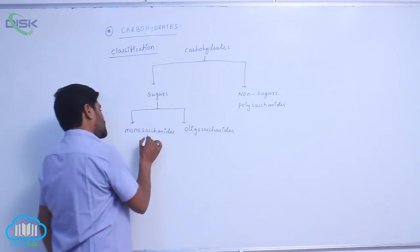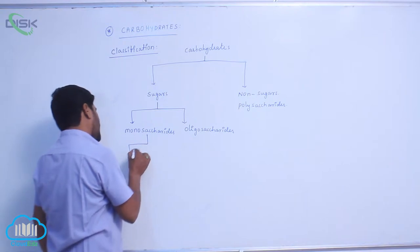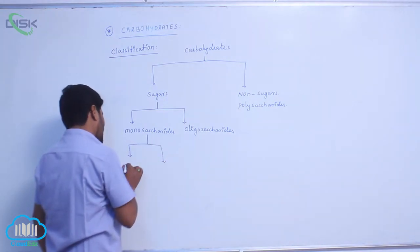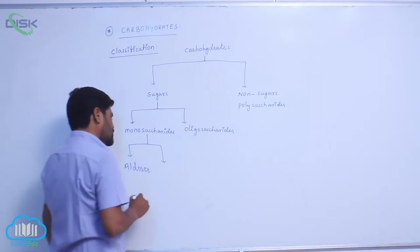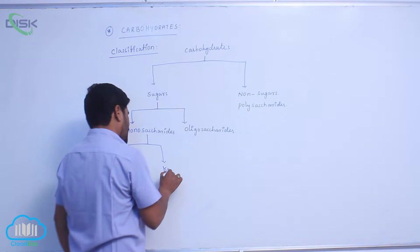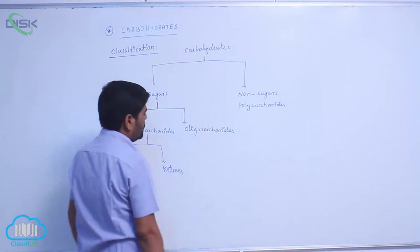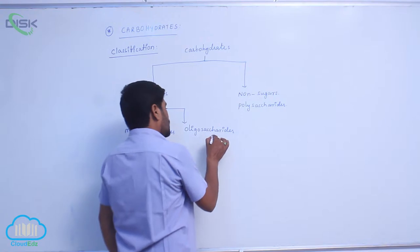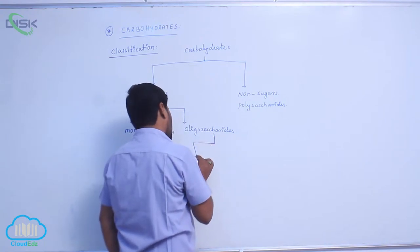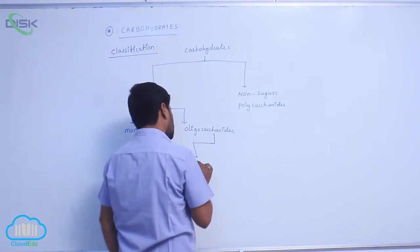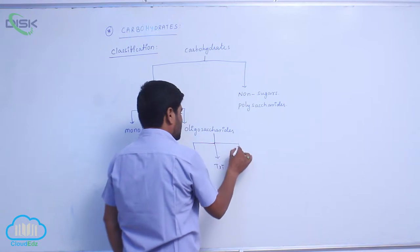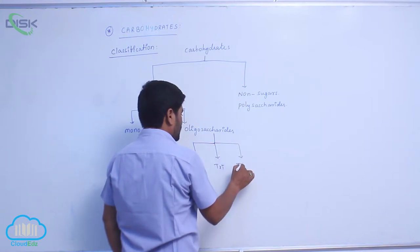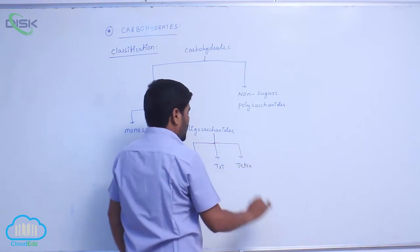Monosaccharides are again classified into two types: one is aldoses, and the second one is ketoses. The oligosaccharides are again classified into disaccharides, trisaccharides, and tetrasaccharides.